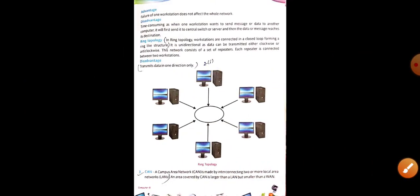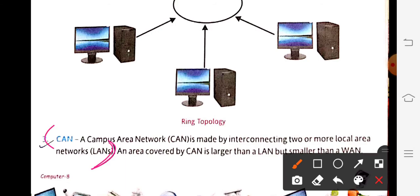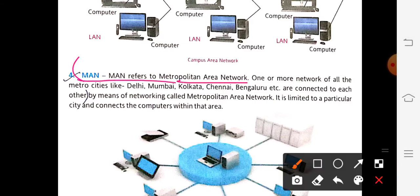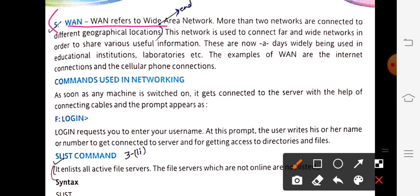For WAN — wide area network — more than two networks are connected to different geographical locations. This completes the long answer on types of networking.